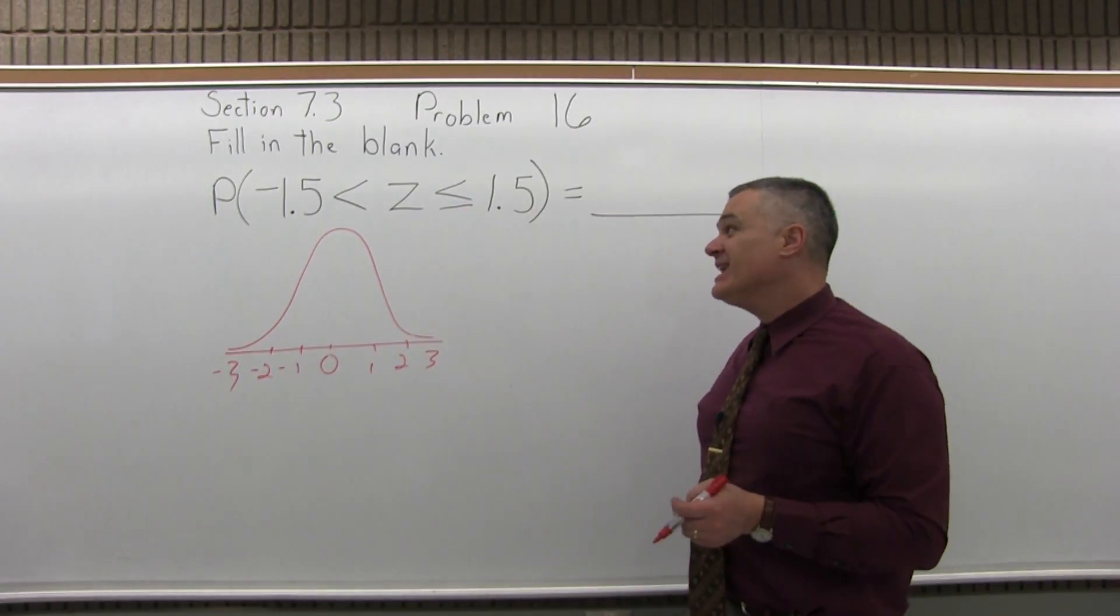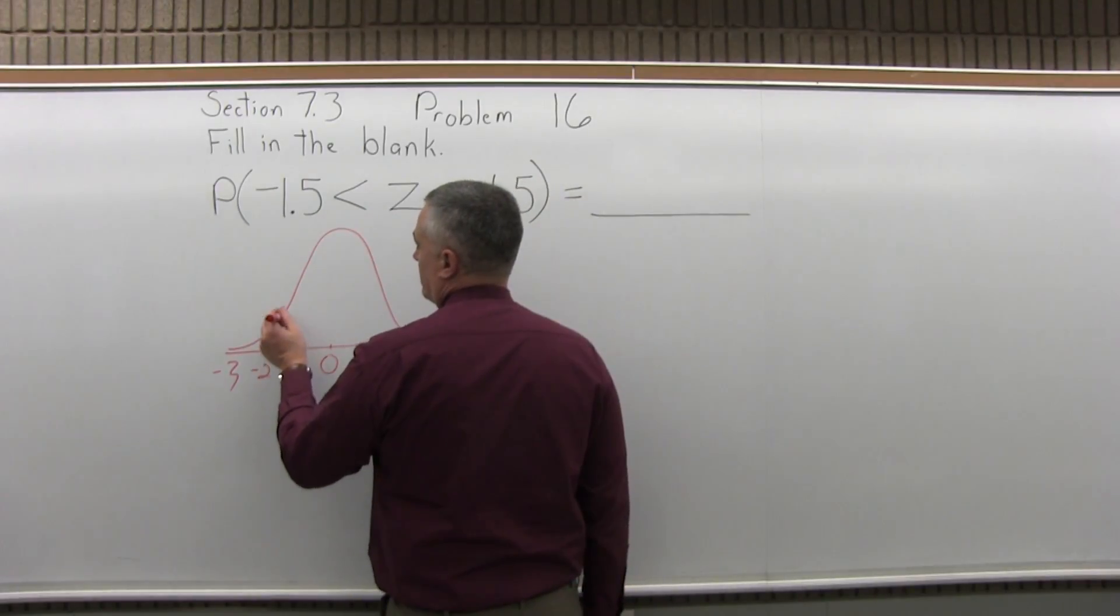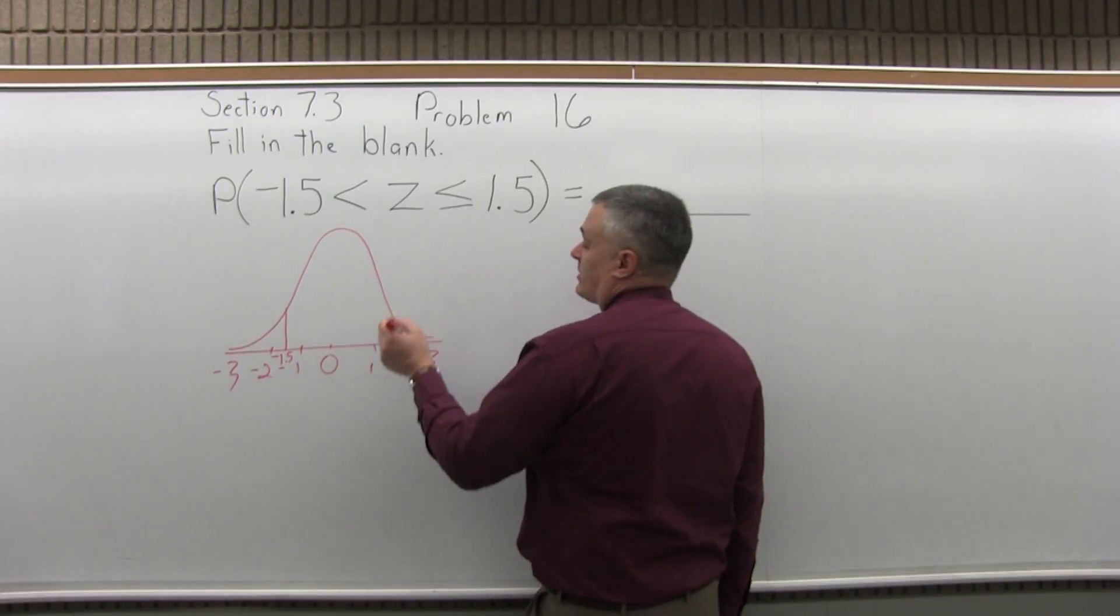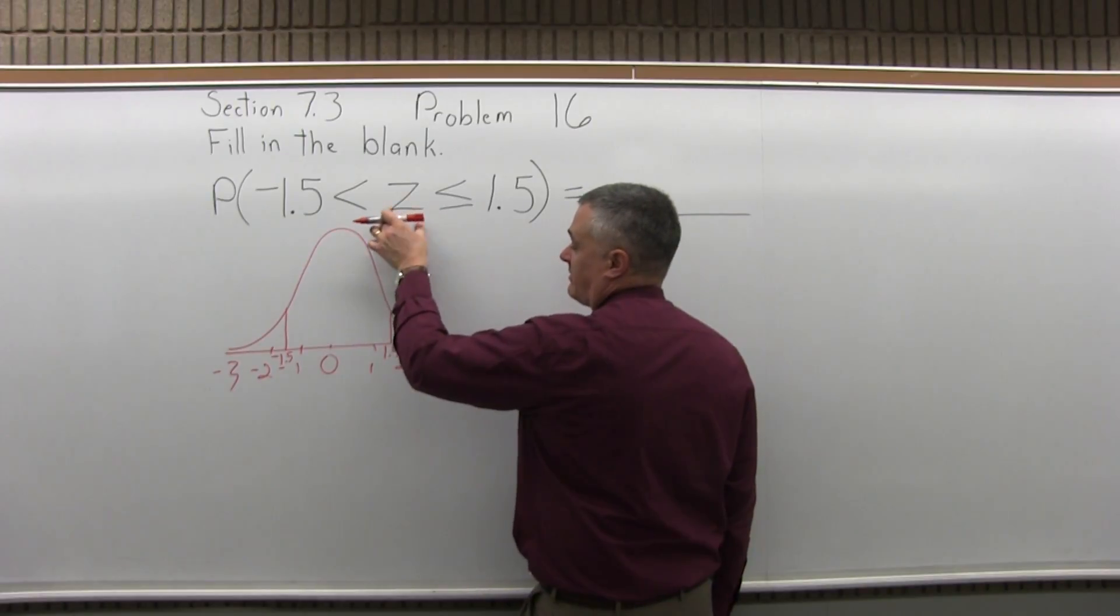So now, negative 1.5 will be halfway between negative 1 and negative 2. There's my negative 1.5. And positive 1.5 is halfway between positive 1 and positive 2. Positive 1.5. And I want the area in-between.